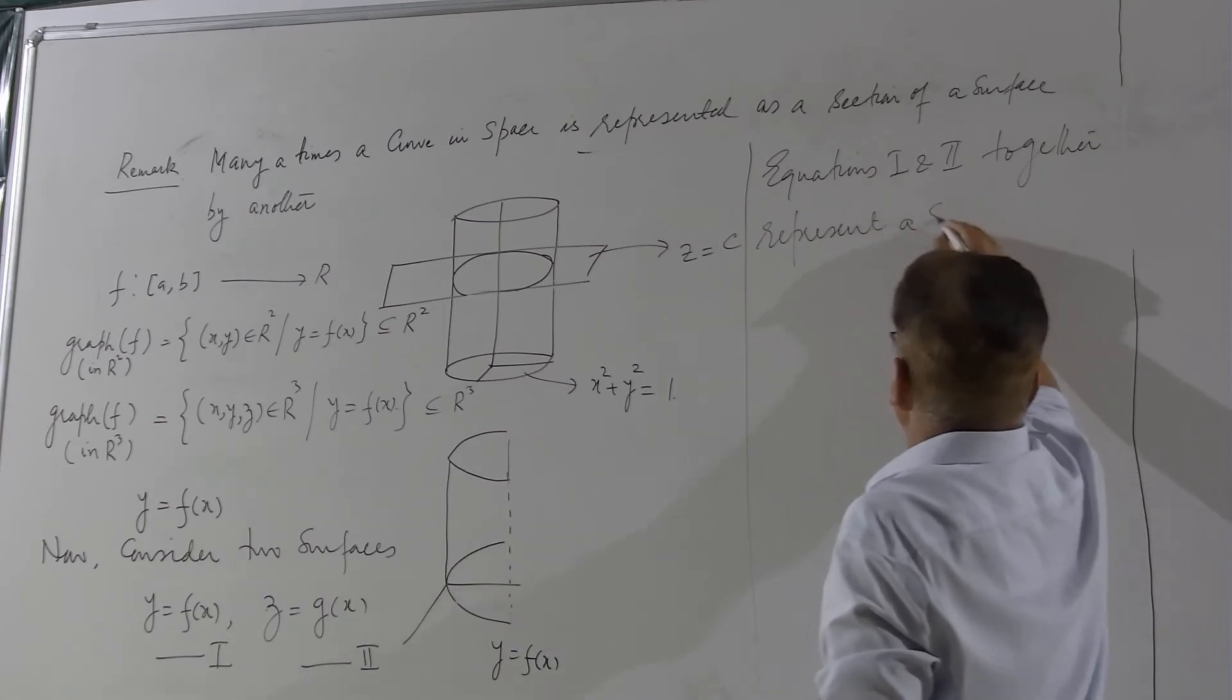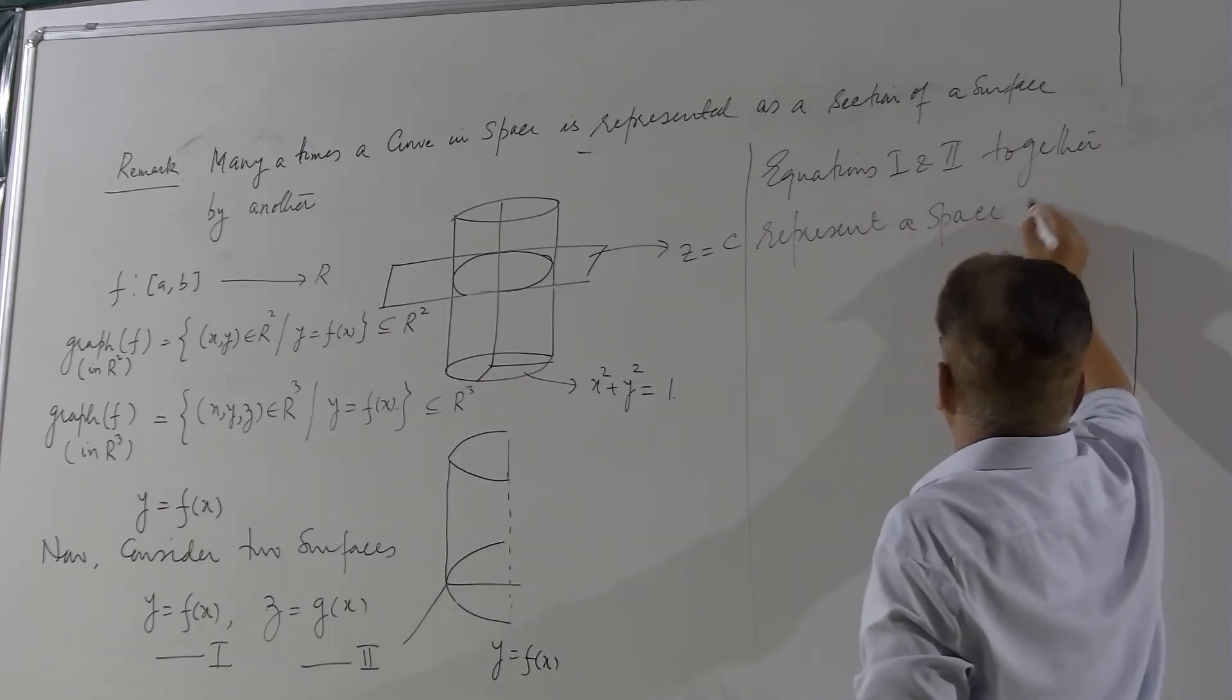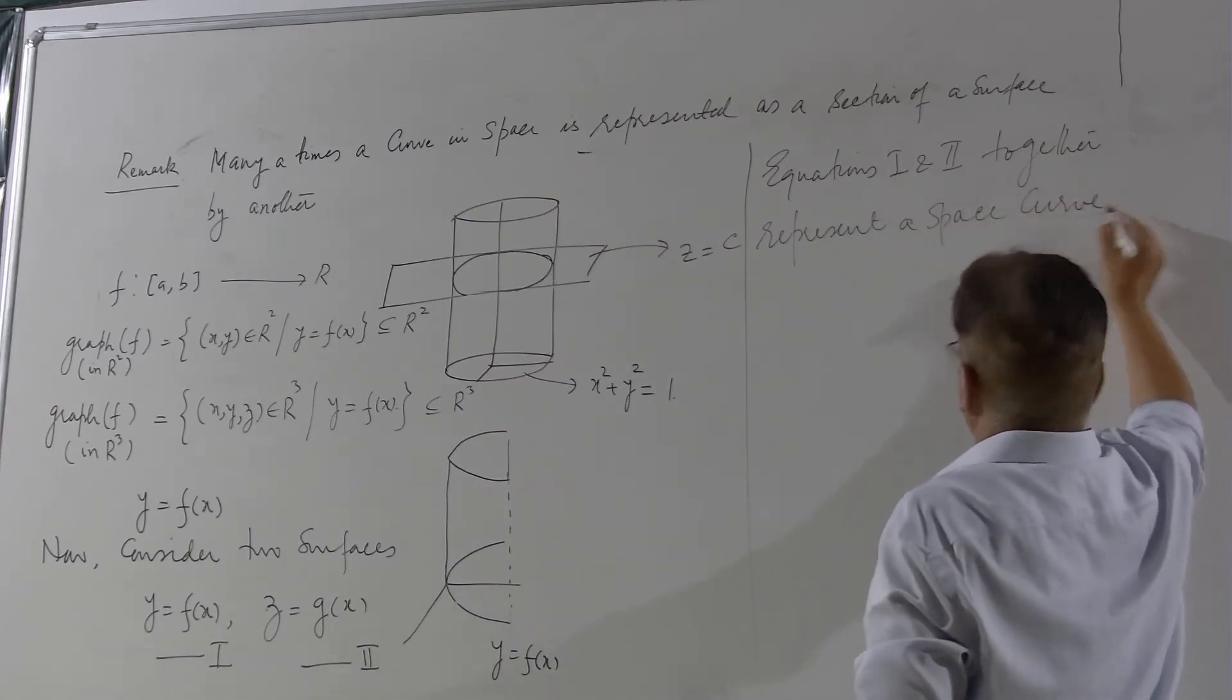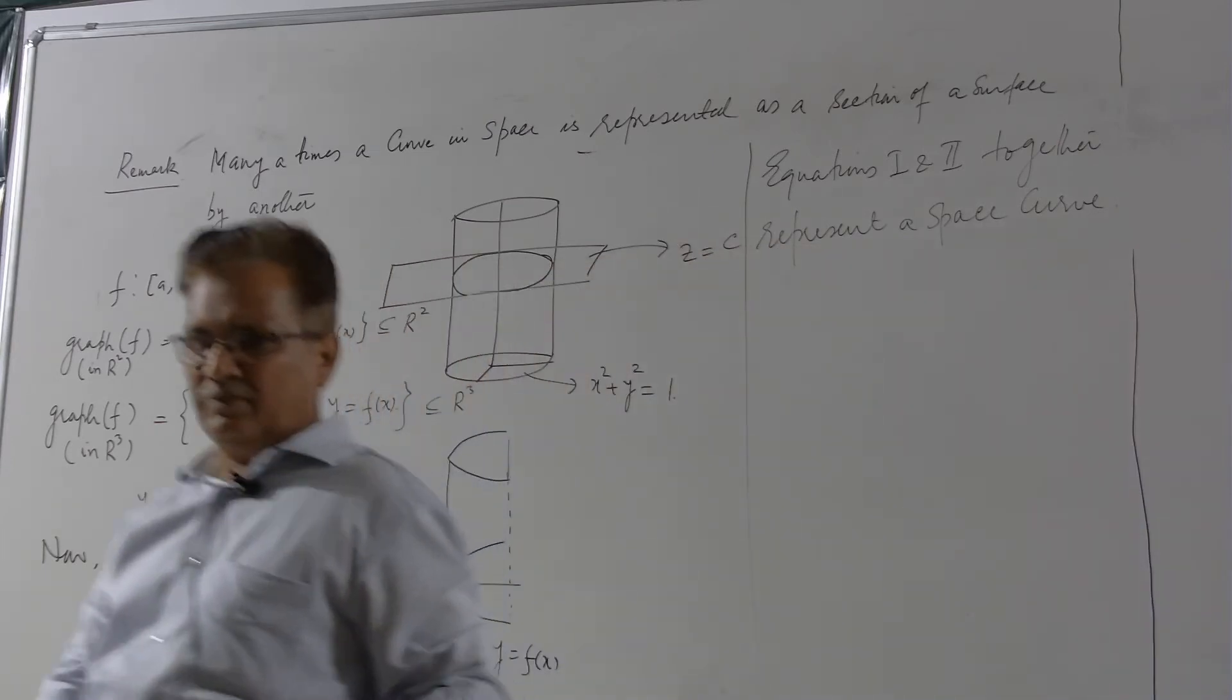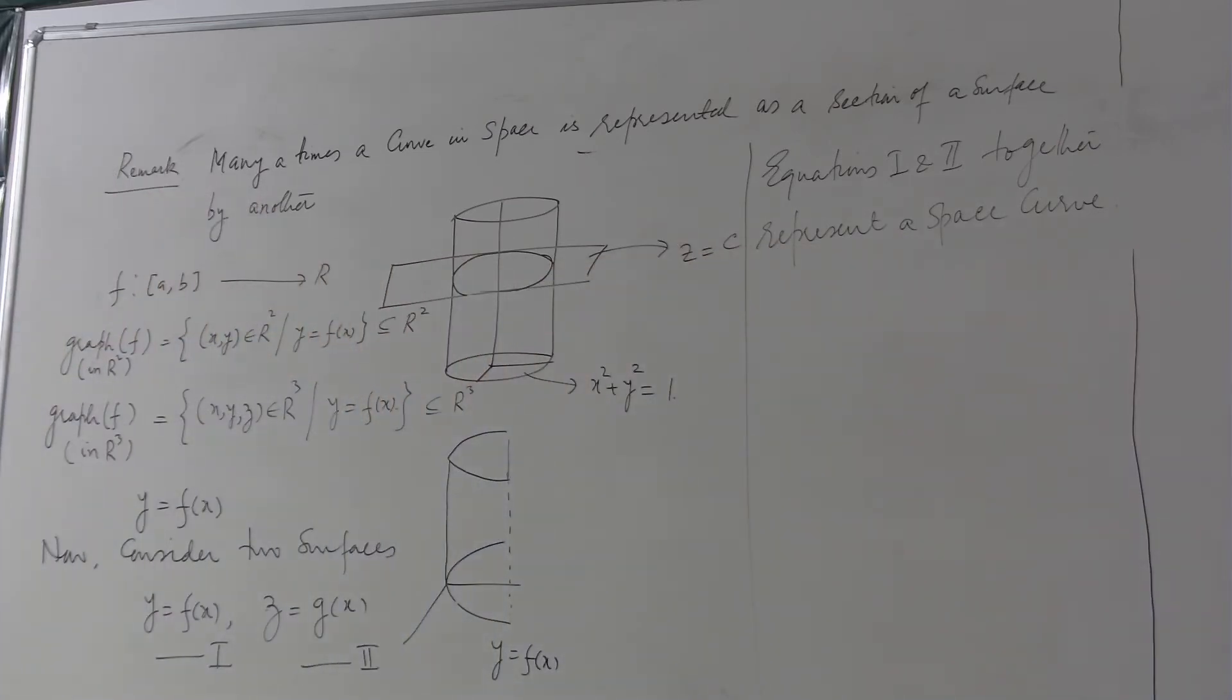So we should convince ourselves the two equations of two surfaces, y = f(x) and z = g(x), will represent a space curve. So many times we write down the equation of a curve as these two.